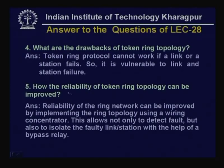The drawback of token ring topology is that it cannot work if a link or station fails — it is vulnerable to such failures. This is overcome in FDDI. Reliability of ring topology can be improved using a wiring concentrator, which allows detection and isolation of faulty links or stations using bypass relays. This concludes the discussion on high speed local area networks. In this lecture we covered FDDI, fast Ethernet, gigabit Ethernet, and switched LANs. In the next lecture, we will discuss wireless LAN. Thank you.